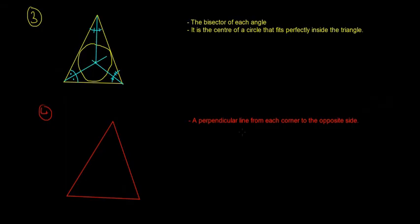The last one then is the orthocenter. So the orthocenter, what you have to do is, as it's written here, is draw a perpendicular line from each corner to the opposite side. So say this is one side. We have to draw a perpendicular line from here to the opposite side. So let's say that's a perpendicular line.